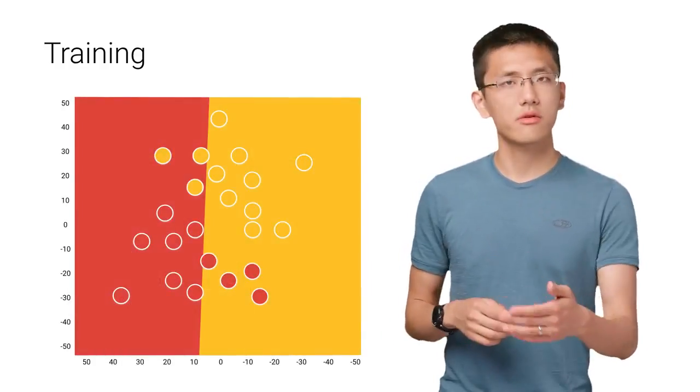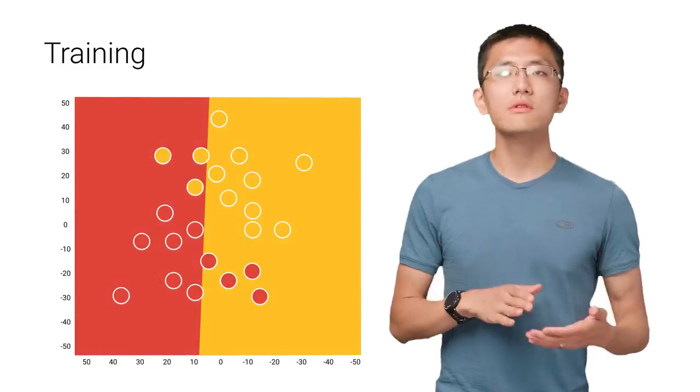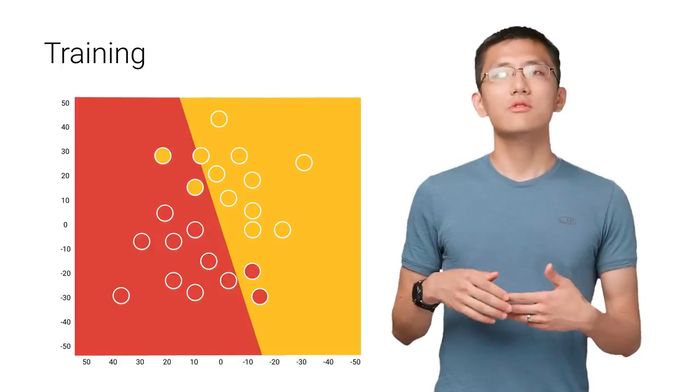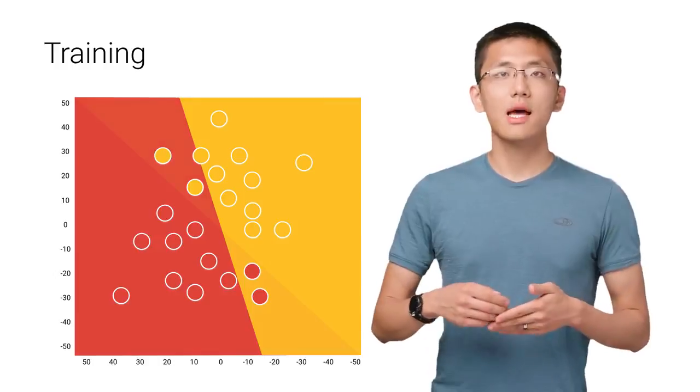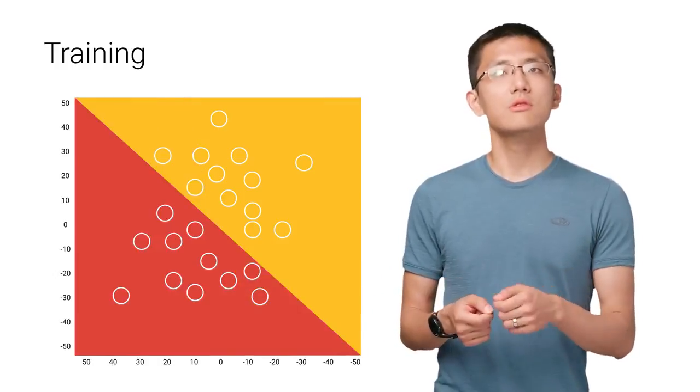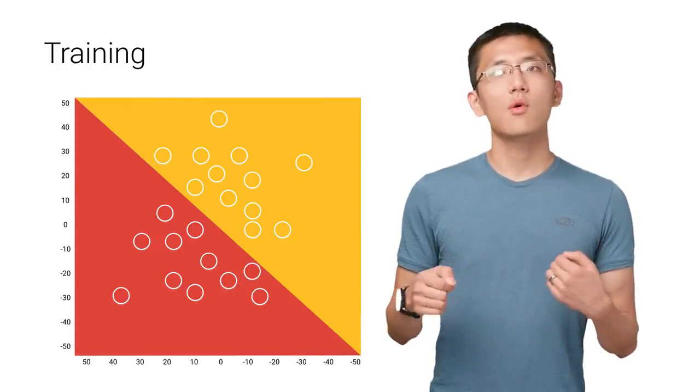So let's look at what that means more concretely for our dataset. When we first start the training, it's like we drew a random line through the data. Then, as each step of the training progresses, the line moves step by step closer to the ideal separation of the wine and beer.